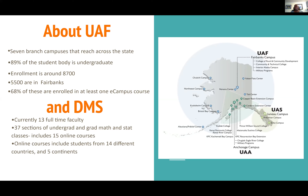68% of our undergraduate students are enrolled in one of our e-campus or online courses. Our Department of Mathematics and Statistics currently has 13 full-time faculty and 37 sections of undergraduate and graduate math and stat classes, with 15 of them currently online. Our online courses include students from 14 different countries and five different continents.